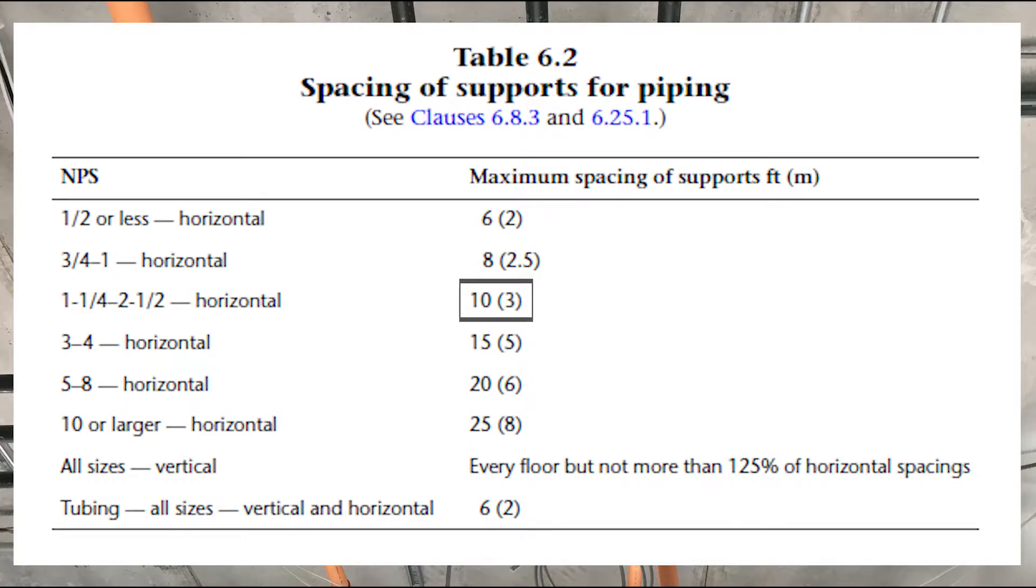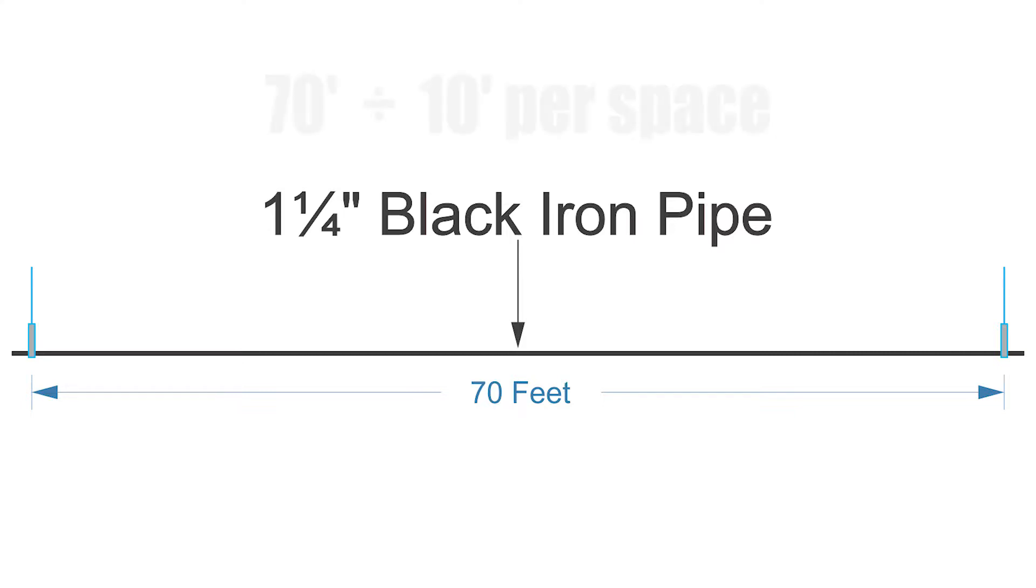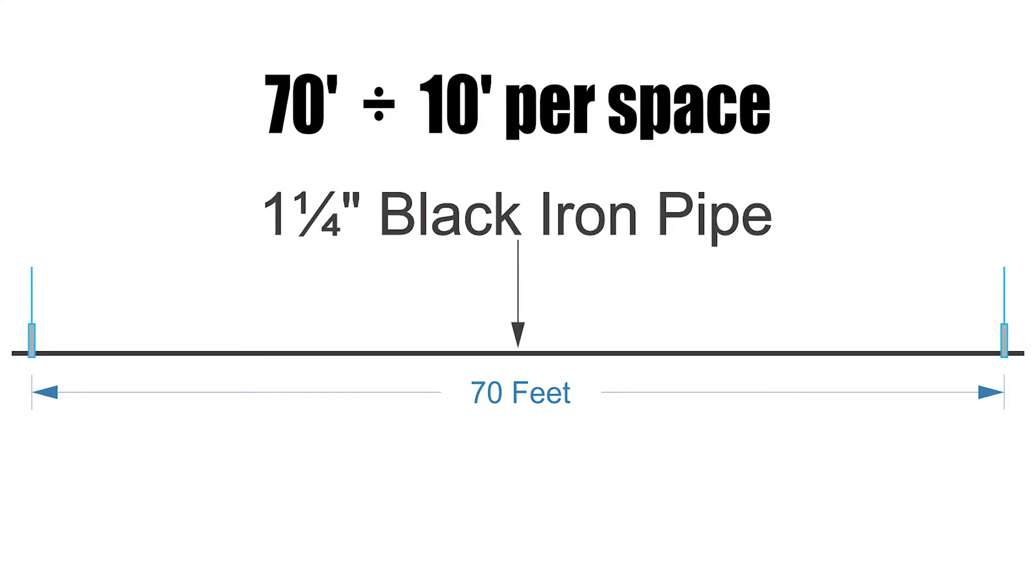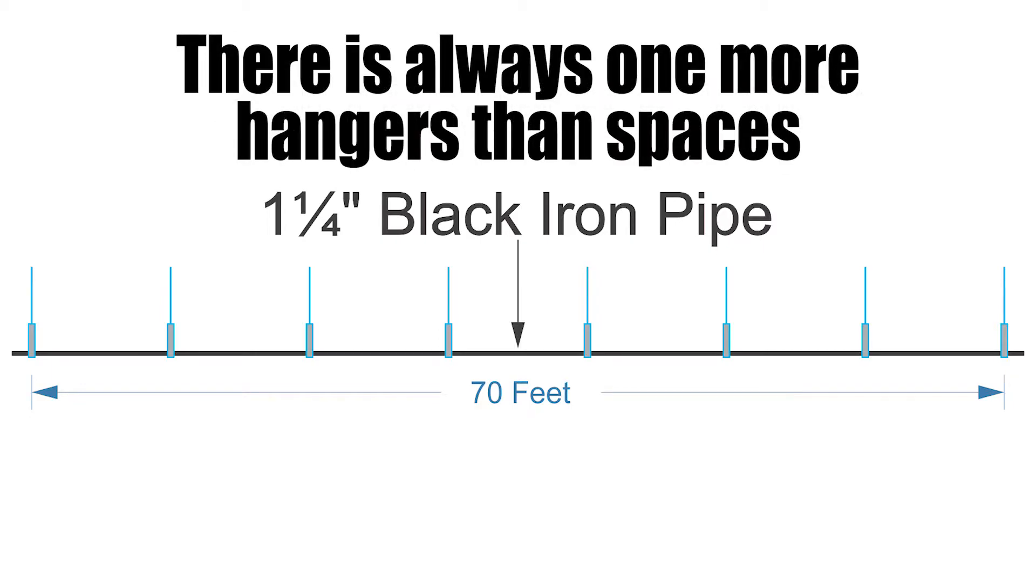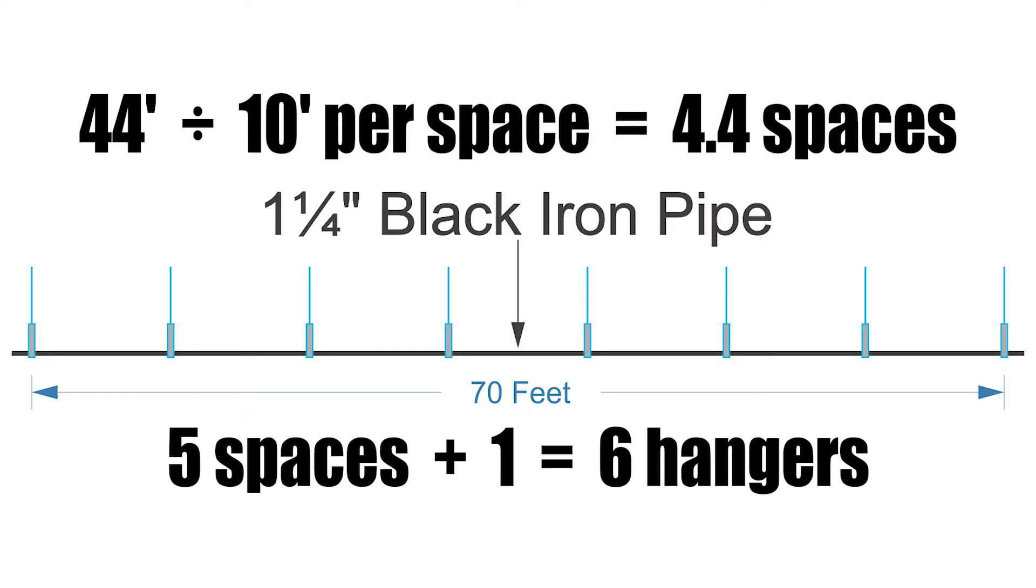Now I need to do some simple math. I've got a 70 foot long pipe divided by 10 foot spacing equals seven spaces. Note that is the amount of spaces, not the amount of hangers. There is always one more hanger than there are spaces. So seven plus one equals eight hangers.